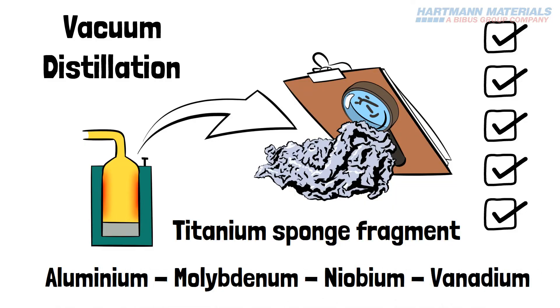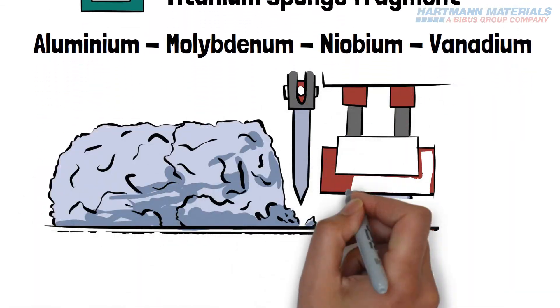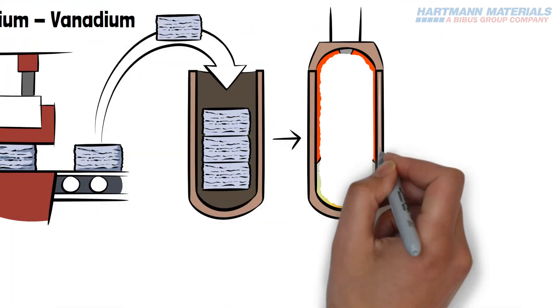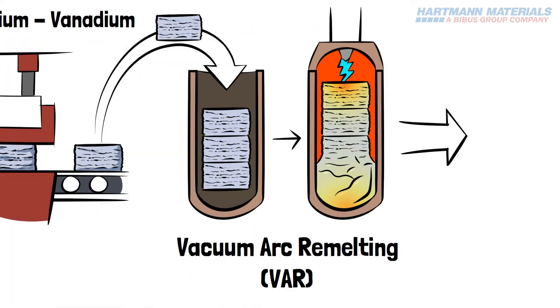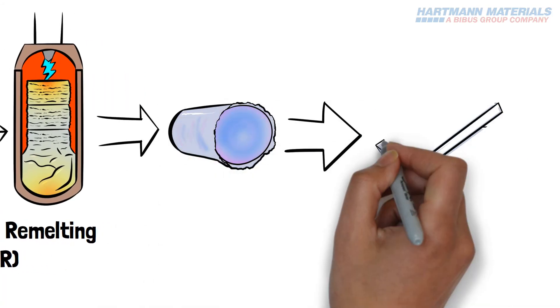The sponge and alloying elements are consolidated under pressure and then melted either by vacuum arc remelting or electron beam melting to produce an ingot with a homogenous composition and microstructure.